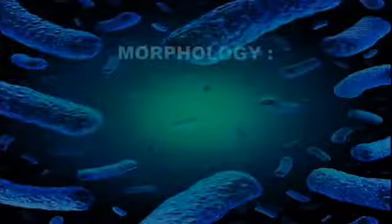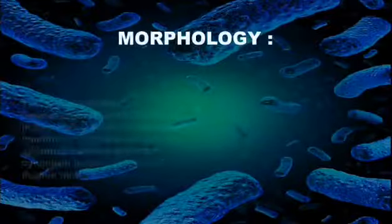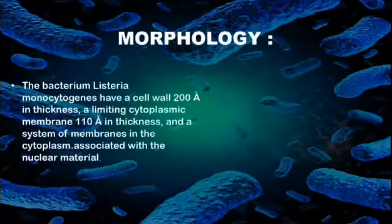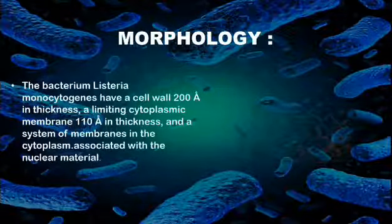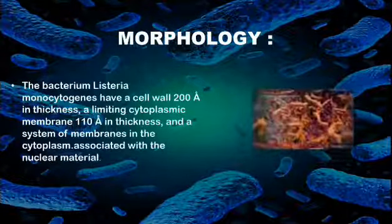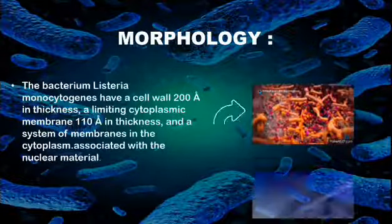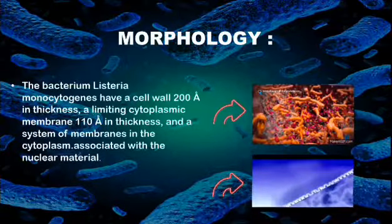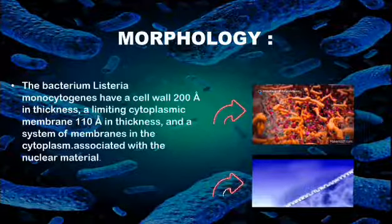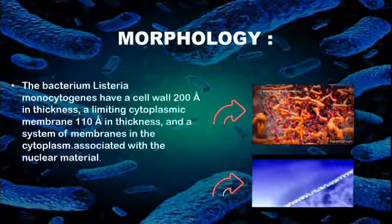The morphology of Listeria includes a cell wall of 200 angstroms in thickness, a cytoplasmic membrane of 110 angstroms in thickness, and a system of membranes filled with nuclear material.